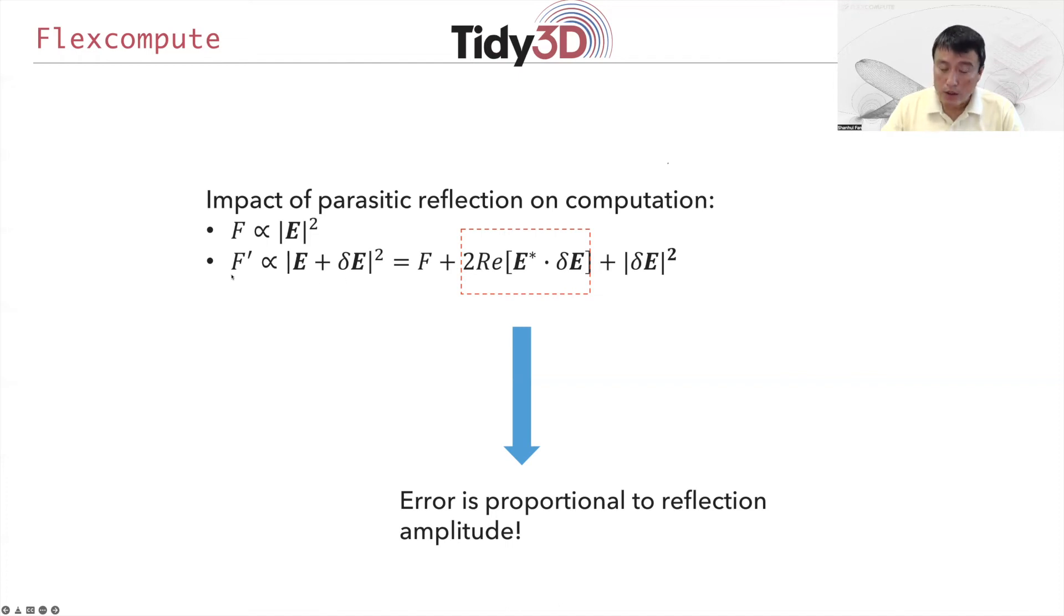Now suppose you have parasitic reflection. Then the field is going to be different from the actual physical field by a perturbation as introduced by the reflection. As a result, the intensity is also going to be different from the desired intensity. When you look at the formula here, you will see that the leading factor of the deviation from the accurate result scales as delta E, or rather scales as the amplitude reflection coefficient. In other words, and I think this is actually quite an important observation, even though you are measuring intensity which is absolute value E squared, the error in measuring the intensity due to parasitic reflection scales as the amplitude, not the intensity, of the reflective wave.